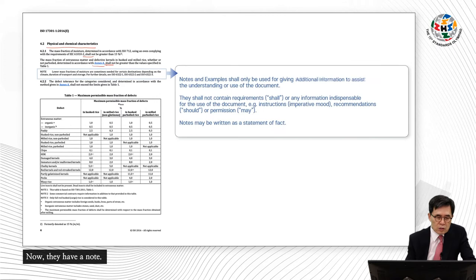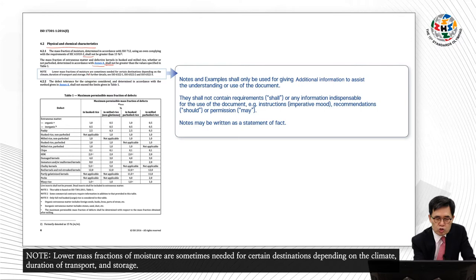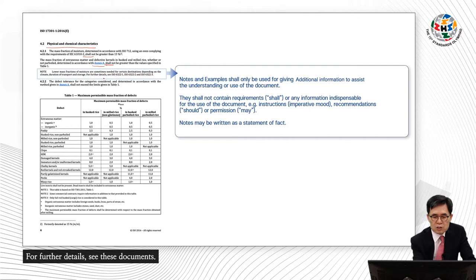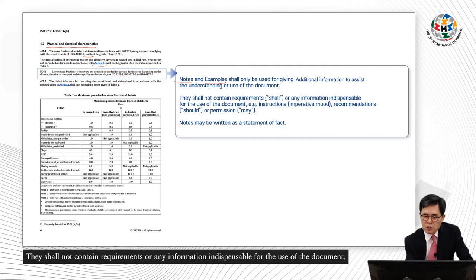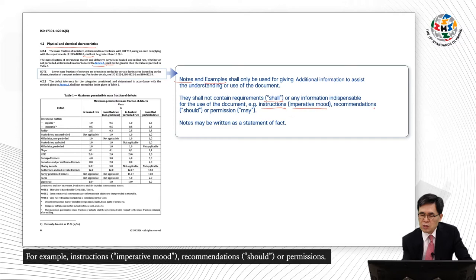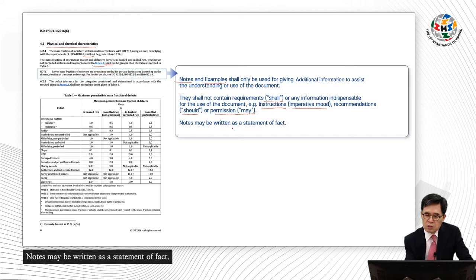They also have a note: 'Lower mass fractions of moisture are sometimes needed for certain destinations depending on the climate, duration of transport and storage. For further details, see these documents.' Notes and examples shall only be used for giving additional information to assist the understanding or use of the document. They shall not contain requirements or any information indispensable for the use of the document — for example, instructions, imperative mode, recommendations ('should'), or permissions. Notes may be written as a statement of fact.